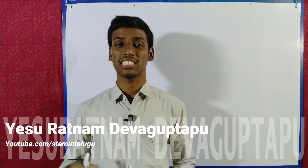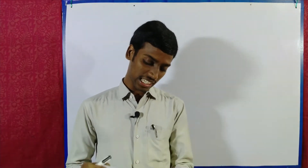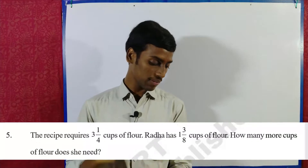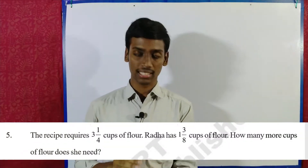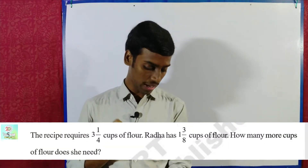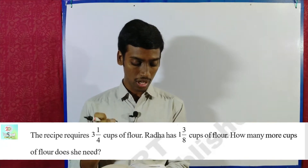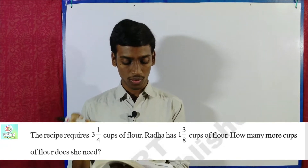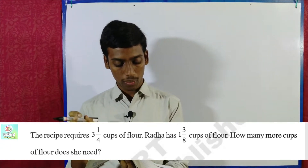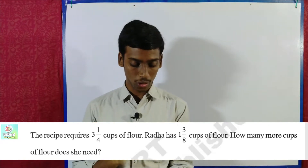Welcome students! This is Asratna Meer Choushna Stampin. In this video, I will tell you about the 5th step of the recipe. The recipe requires 3 and 1/4 cups of flour. Radha has 1 and 3/8 cups of flour. How many more cups of flour does she need?